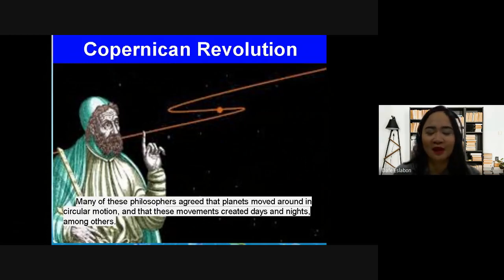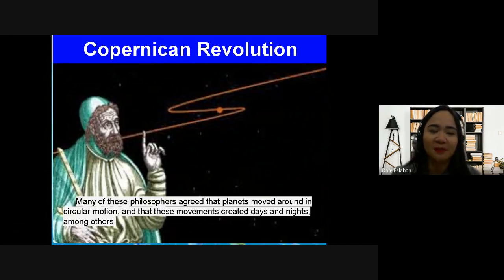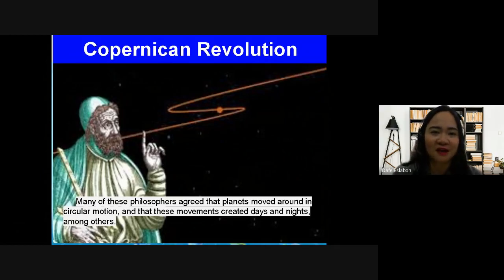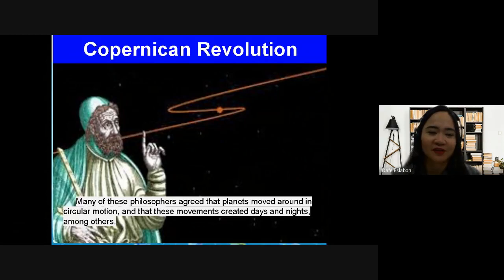With the use of the telescope and many inventions, scientists agreed that what causes day and night is the revolution of the planets in circular motion. As you can see in the picture, they had that intellectual understanding and found an answer: what causes day and night is the rotation of the planet in its circular motion.